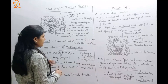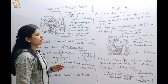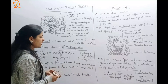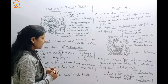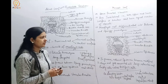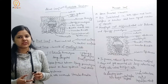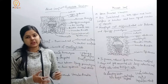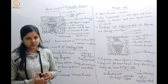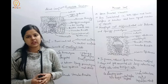This was the basic difference between dicot and monocot leaves that we studied today. In the next lecture, we will be discussing the last topic of this chapter, which is secondary growth. That's all for this lecture. Thank you.